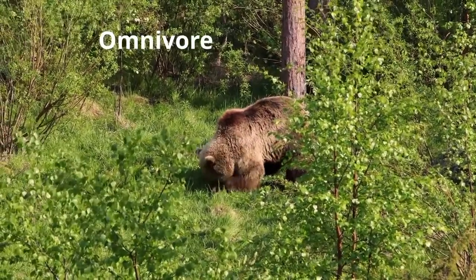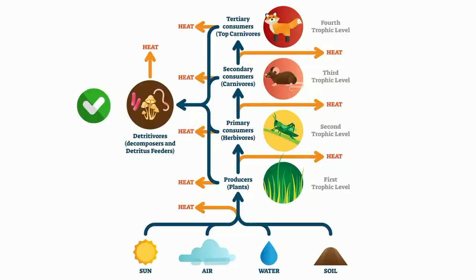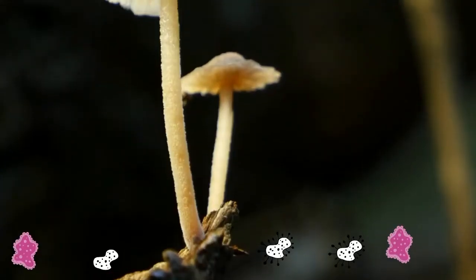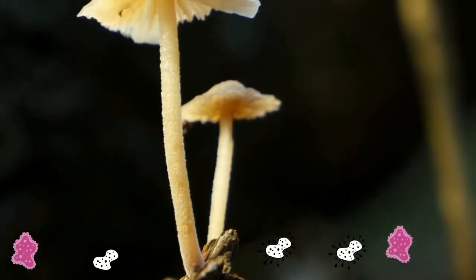You may also notice in the food chain decomposers. These are organisms that gain energy by breaking down the remains of other organisms. Examples include fungi and bacteria.